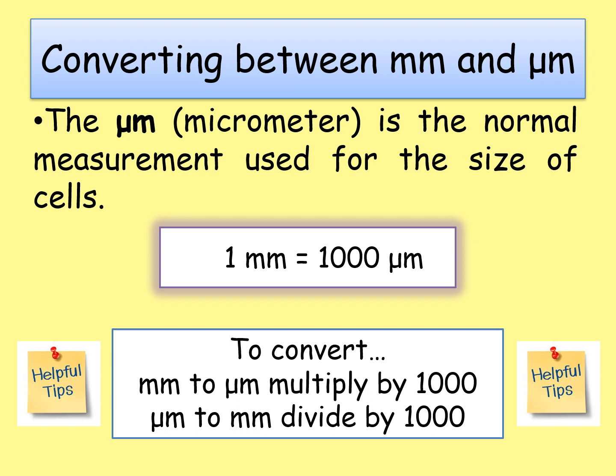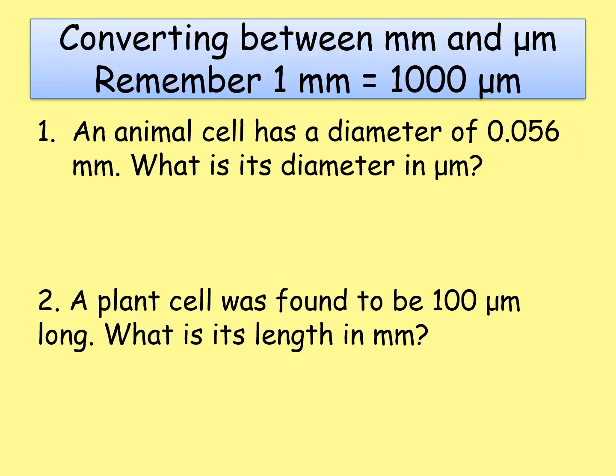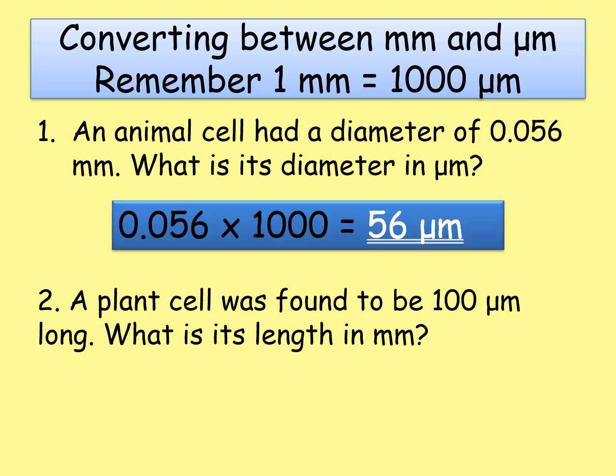Here are the handy hints to remember: if you are given a measurement in millimetres and you want to convert to micrometres, you multiply by 1000. Let's try an example — I'll read through it and I want you to pause the video and have a go. Remember: one millimetre is equal to 1000 micrometres. Question one: an animal cell has a diameter of 0.056 millimetres. What is its diameter in micrometres? Since we're converting from millimetres to micrometres, we multiply: 0.056 × 1000 = 56 micrometres.